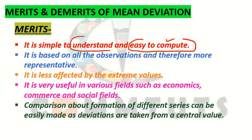The second merit is that it is based on all the observations. This merit is very important. Mean deviation is based on however many observations are there in your data — all of them. Mean deviation includes all the items present in your data. All of them are included.